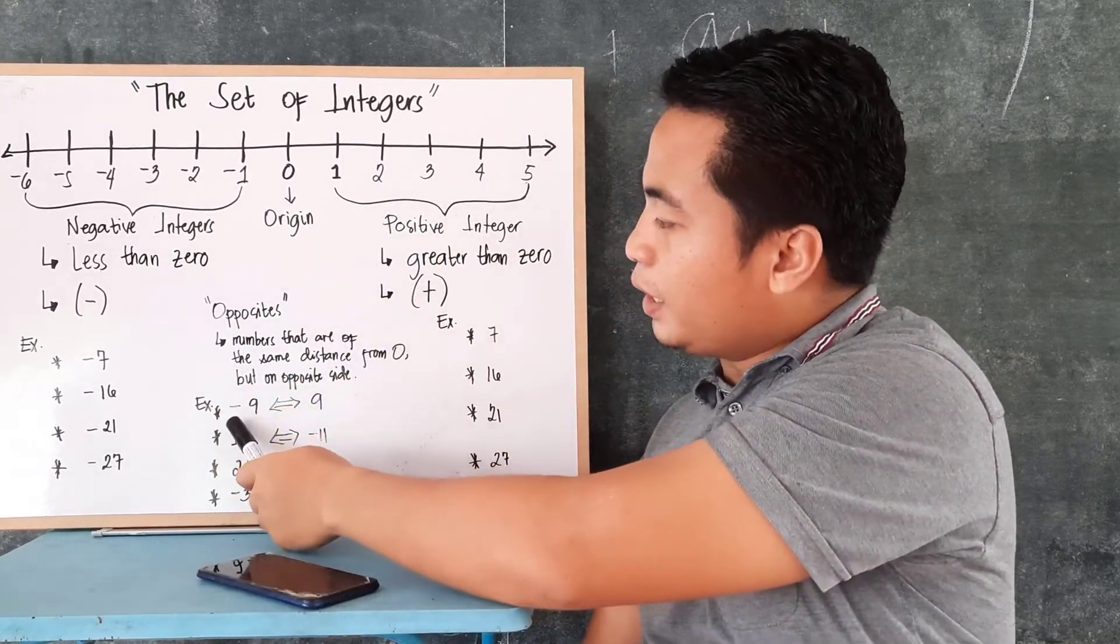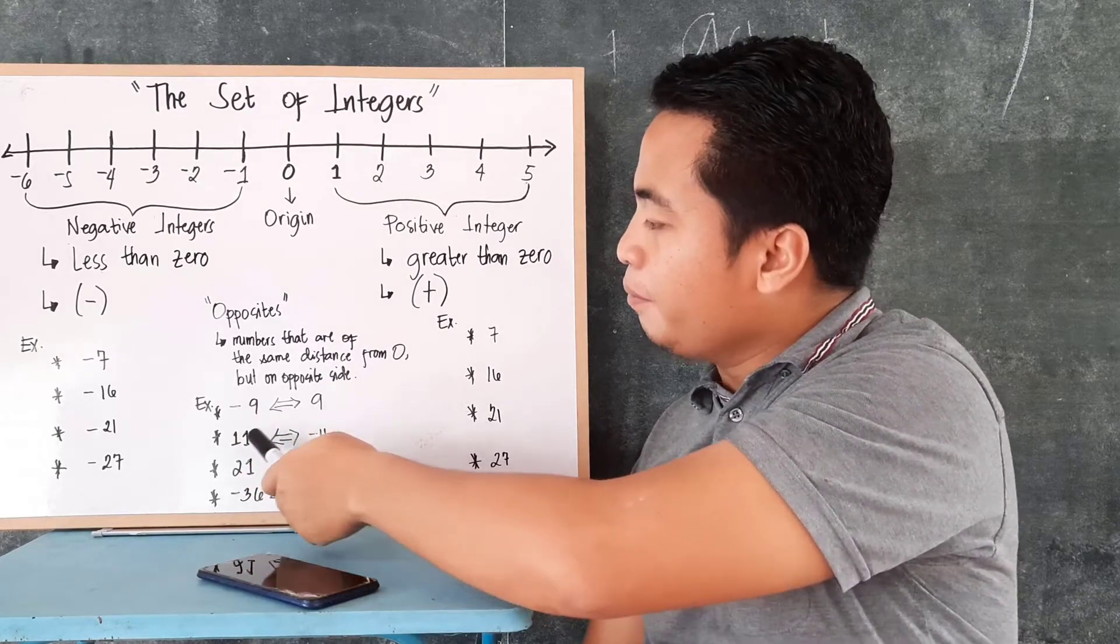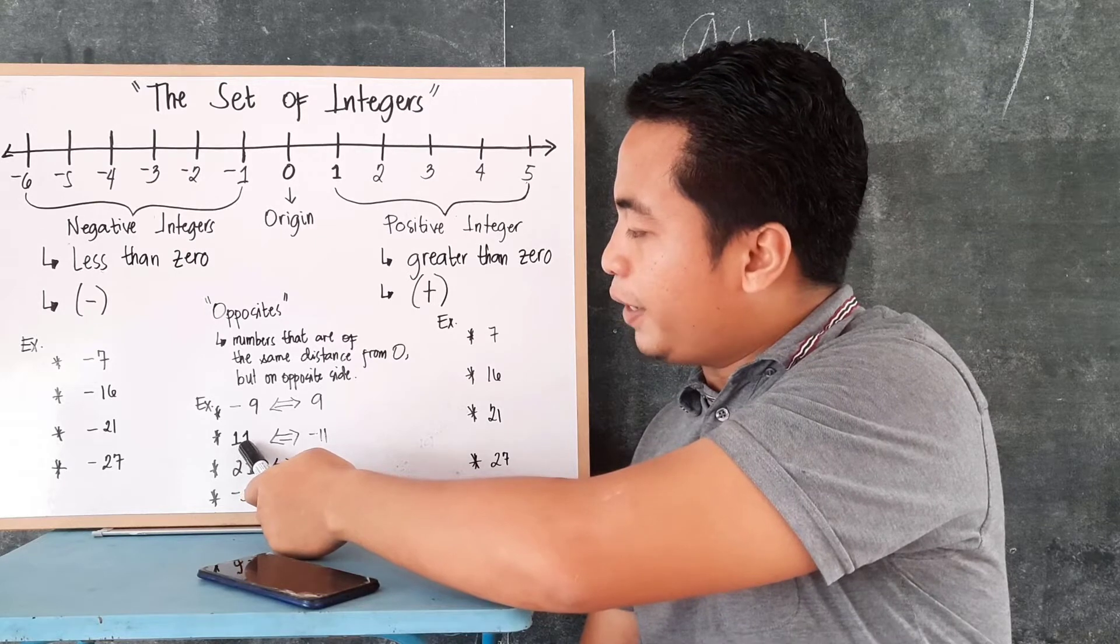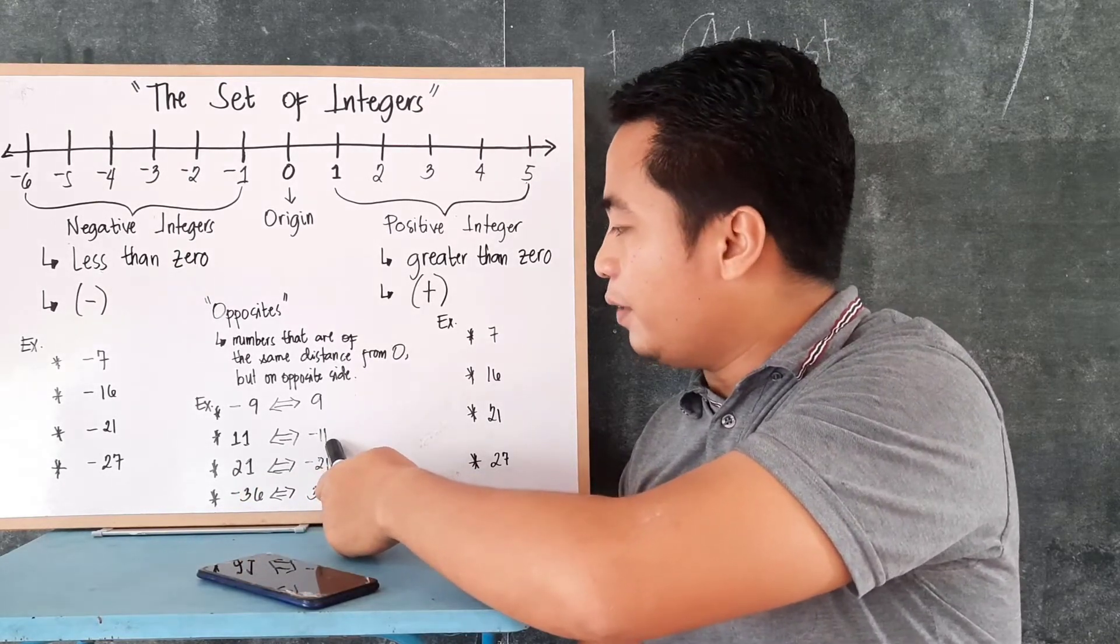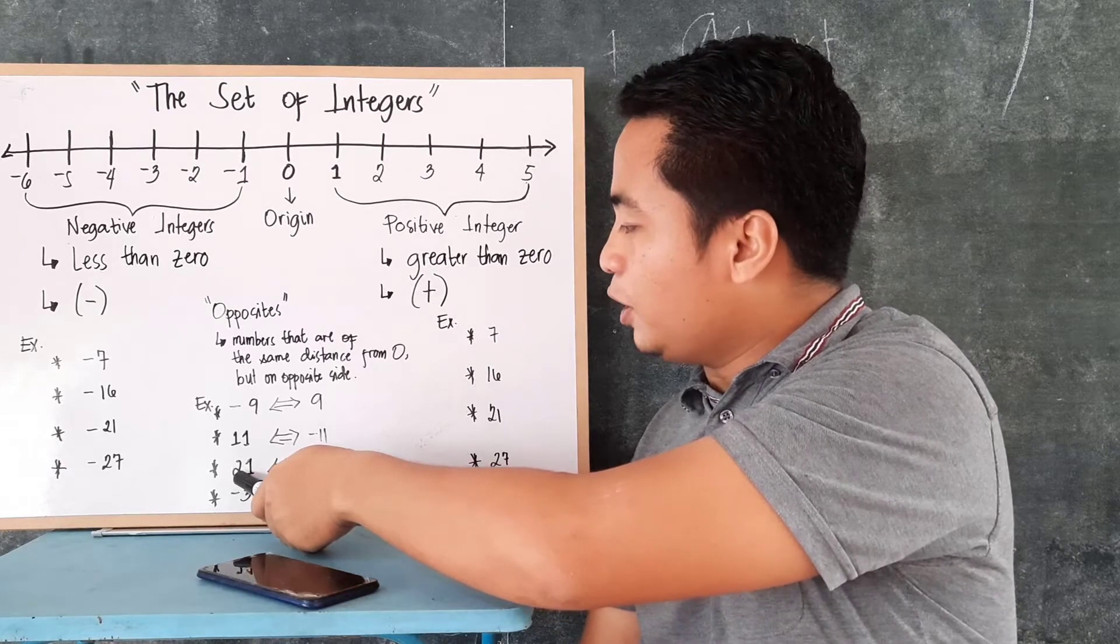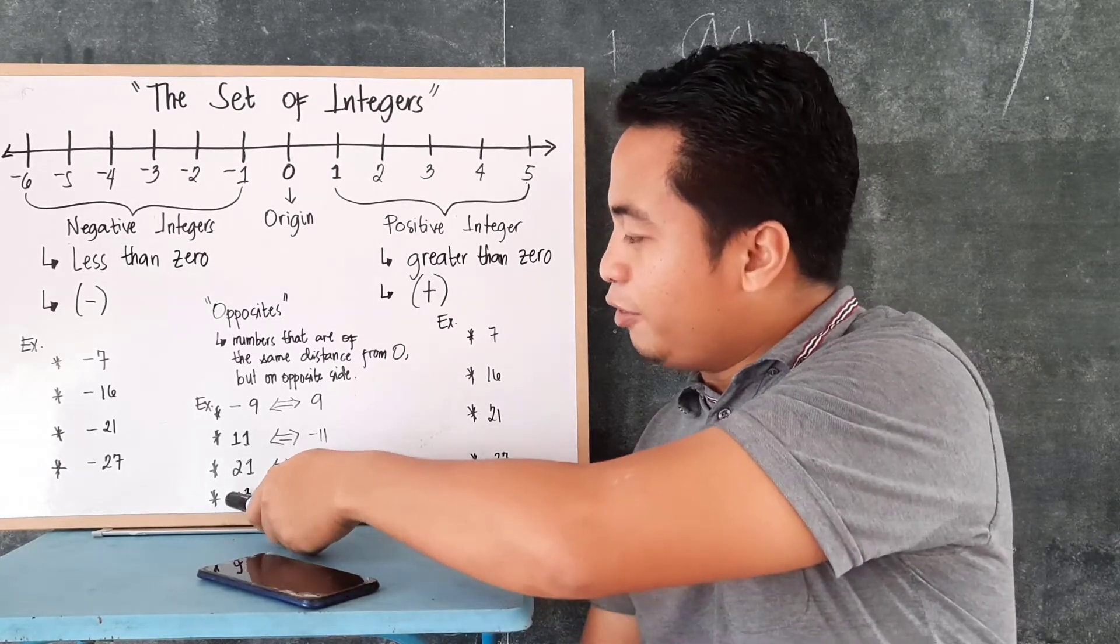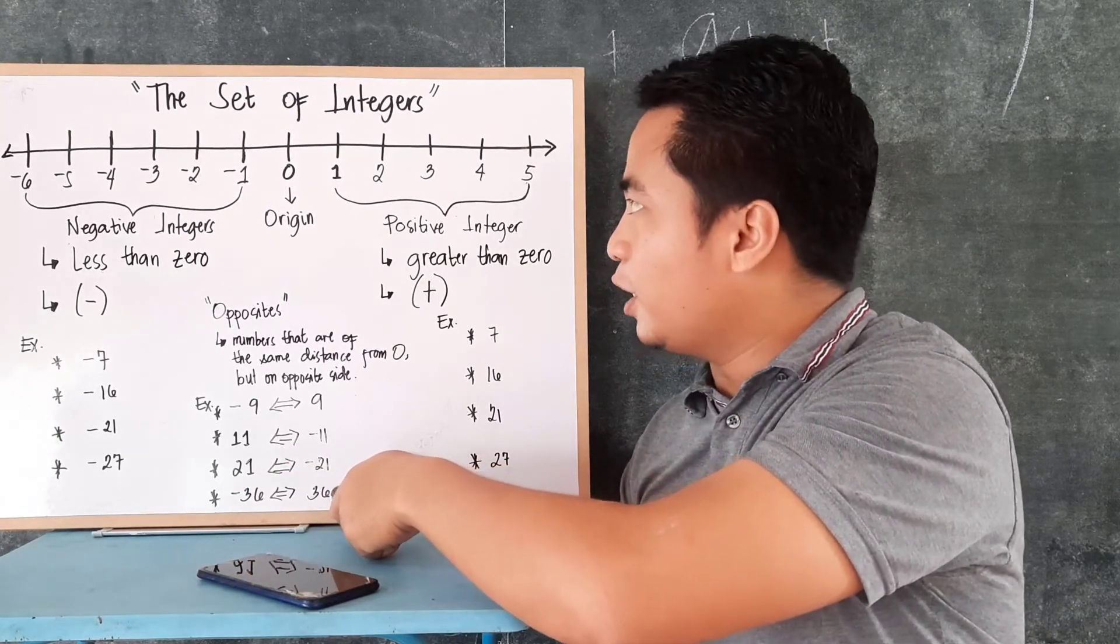So, for example, if you have negative 9, the opposite of negative 9, it's positive 9. And if you have given number 11, and you are asked to find the opposite, the opposite of that is negative 11. And if you have positive 21, the opposite is negative 21. And if you have negative 36, the opposite is positive 36.